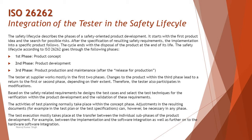Changes to the product within the third phase lead to a return to the first or second phase, depending on their extent. If any changes occur during the production or maintenance phase, the process returns to a previous phase. It's more of an iterative lifecycle — if defects are found during the third phase, the process cycles back to the second phase to complete those changes and then returns to the third phase again.